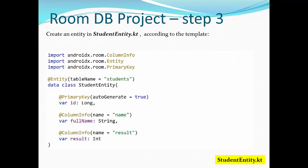Let's get started with student entity Kotlin. According to the template, we will create entity table named students. Data class StudentEntity will be saved in StudentEntity.kt with the following: we have primary key auto-generated of long type, variable id. We have a column info with name, which is associated with a Kotlin variable fullName string. And finally, we have result for the particular student's mark as integer. Variable result type integer, and column name will be result.